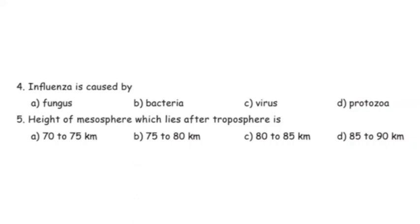Fourth question: influenza is caused by fungus, bacteria, virus, or protozoa? Influenza is a viral disease, so virus is ticked. The fifth question is the height of mesosphere. Looking at the lesson, the mesosphere lies at 80 to 85 km.